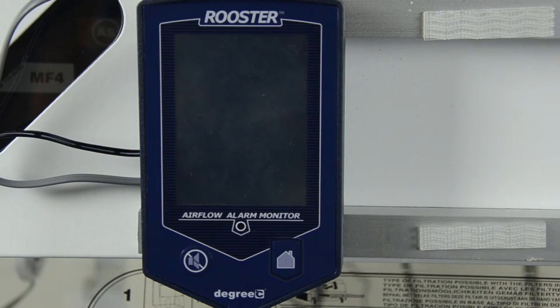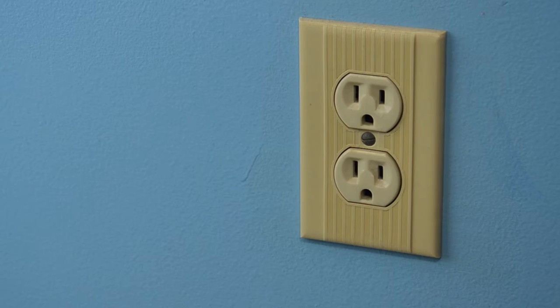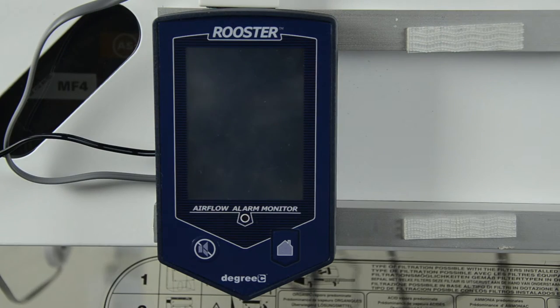Once you have installed your sensor and module into your workstation, power up the Rooster Monitor to initiate the boot up sequence. This can be achieved by plugging in the wall adapter or in a hardwired setup energizing your workstation.